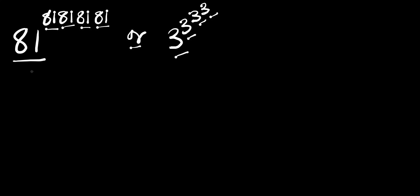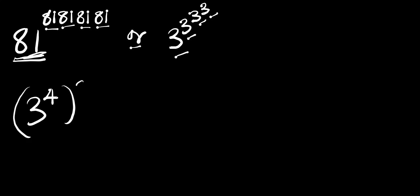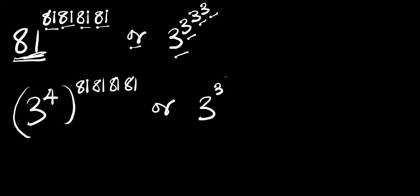We can start by rewriting this 81 in its index form. We can make use of 3 to the power of 4, that is 81, to the power of 81, 81, 81 and 81. Or 3 to the power of 3, to the power of 3 and to the power of 3.